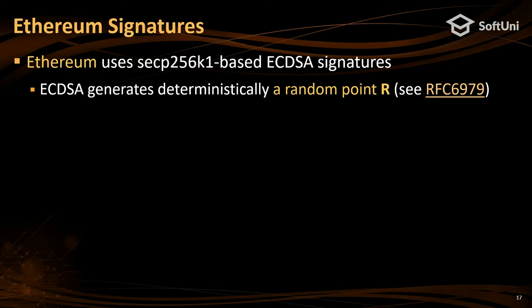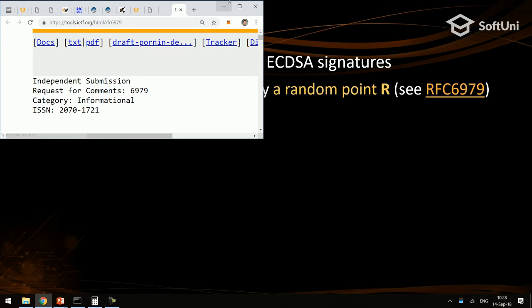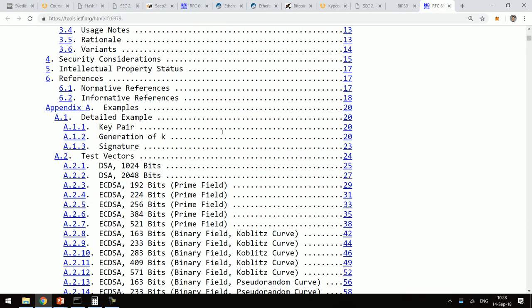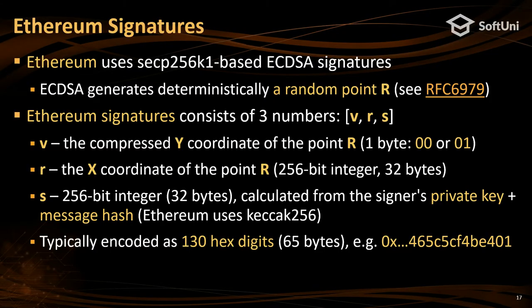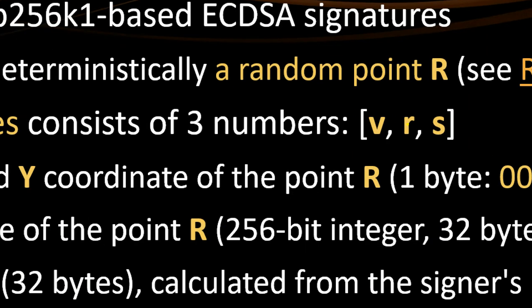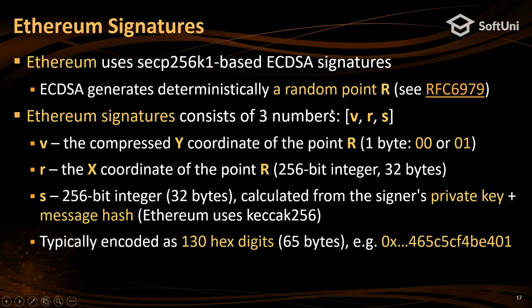The Ethereum signature generates a random point R deterministically according to RFC 6979, which is an internet standard. Ethereum signatures are slightly different from standard SECP256K1 signatures because they add an additional number V, which indicates whether the public key is odd or even. This allows you, if you have the message, to derive the public key used to sign it. So from an Ethereum signature you can extract the public key used during signing.